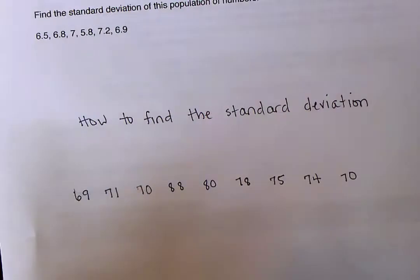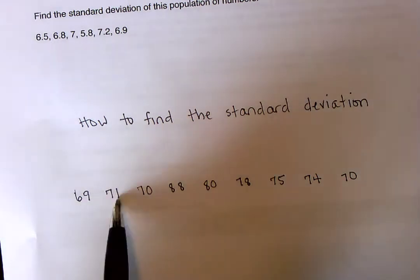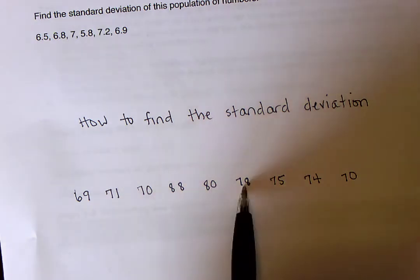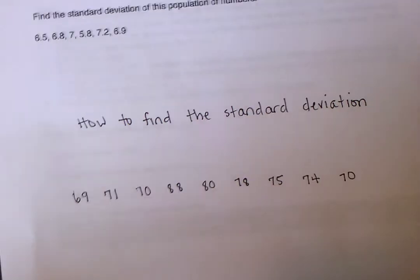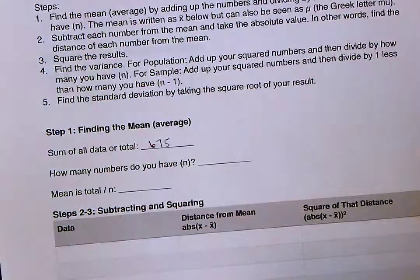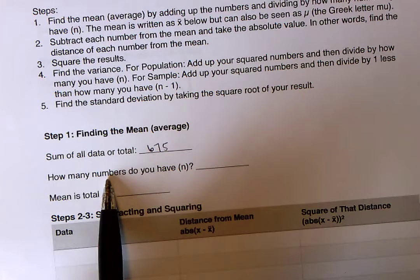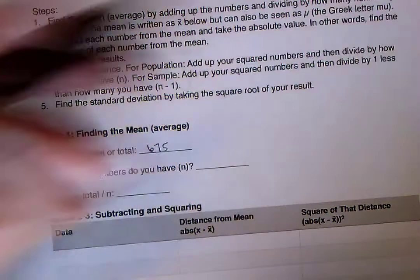So now if we look back at our data set again, we can count 1, 2, 3, 4, 5, 6, 7, 8, 9. So we have 9 numbers. So here the question is how many numbers do you have? What's n? It's 9.